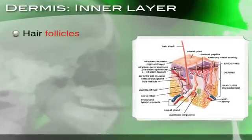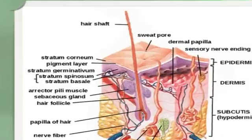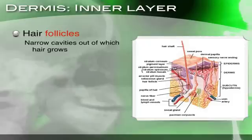Next, hair follicles. Hair follicles are the narrow cavities out of which the hair grows. You can see the hair shaft and the follicle where the hair grows out of.